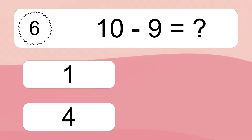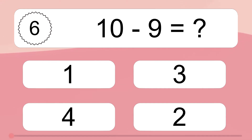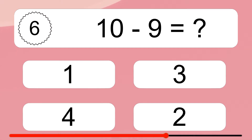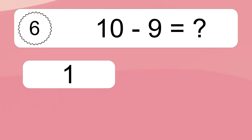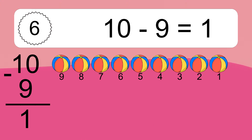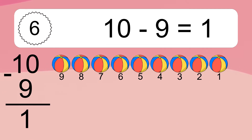10 minus 9 equals what? 10 minus 9 equals 1. Let's count it! 9, 8, 7, 6, 5, 4, 3, 2, 1.